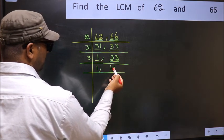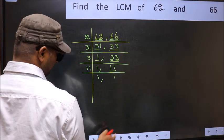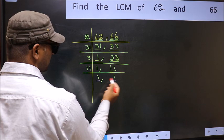Now, we have 11. 11 is a prime number. So, 11 wants 11. So, we got 1 in both the places.